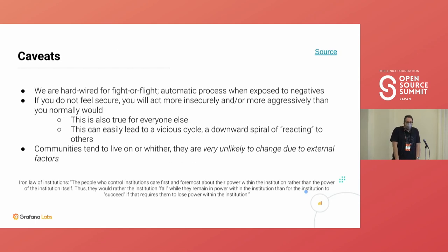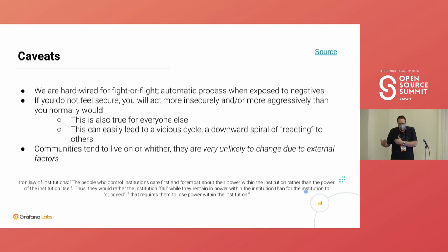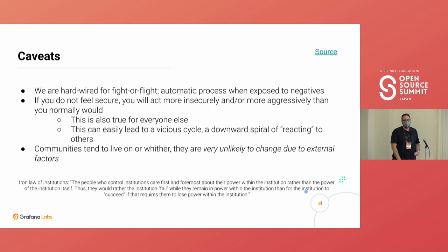We are hardwired for fight or flight. When continuously exposed to negatives we either become very confrontational or we flee and pull away. If you don't feel secure you won't act as gently or as friendly as you otherwise would — which means the group is less positive overall, more people feel insecure, and you get this vicious cycle of a degrading community. It's really hard to stop once it has started; it's much easier to never let it start.